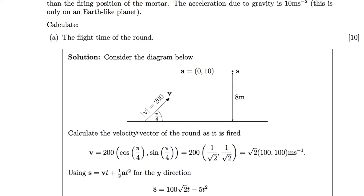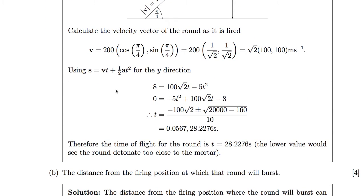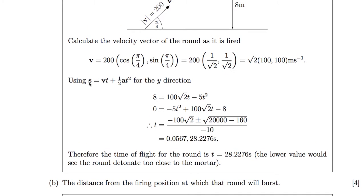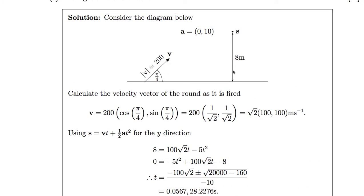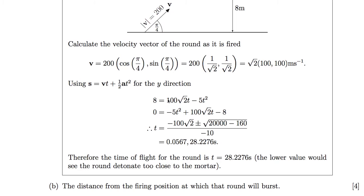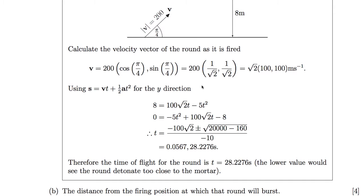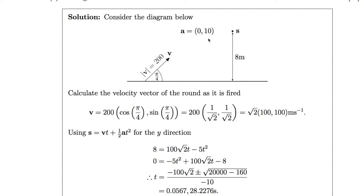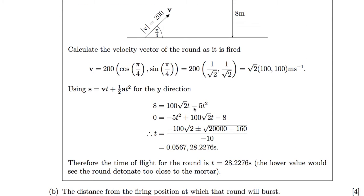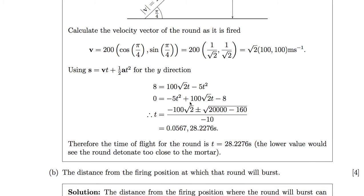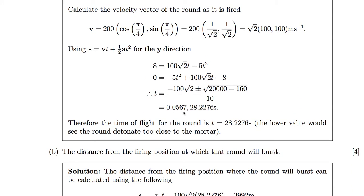The question asks for the flight time of the round. We use the SUVAT equation: S equals velocity times time plus a half times acceleration times time squared. We want the y-component of displacement to equal 8 metres. With Vy = 100√2 and gravity of 10 acting in the negative direction, we get: 8 = 100√2 · t − 5t². Rearranging gives us a quadratic to solve, and solving it gives two values for t.